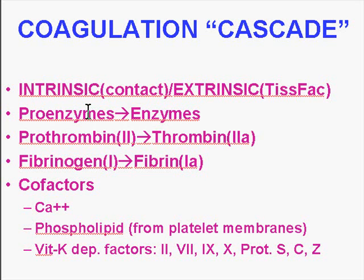It's a series of pro-enzymes being converted into enzymes, by virtue of the fact that their predecessors have become enzymes which convert the next generation of pro-enzymes into enzymes. The penultimate result — the second to last — is a conversion of prothrombin, which is factor 2, into thrombin, which is factor 2a.